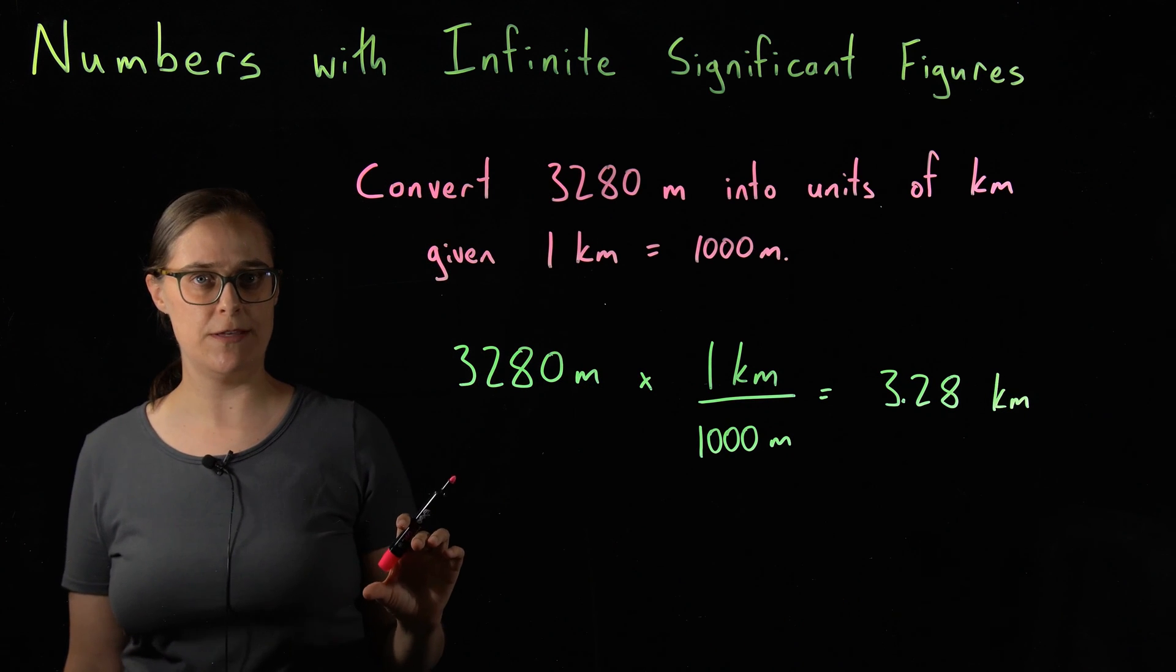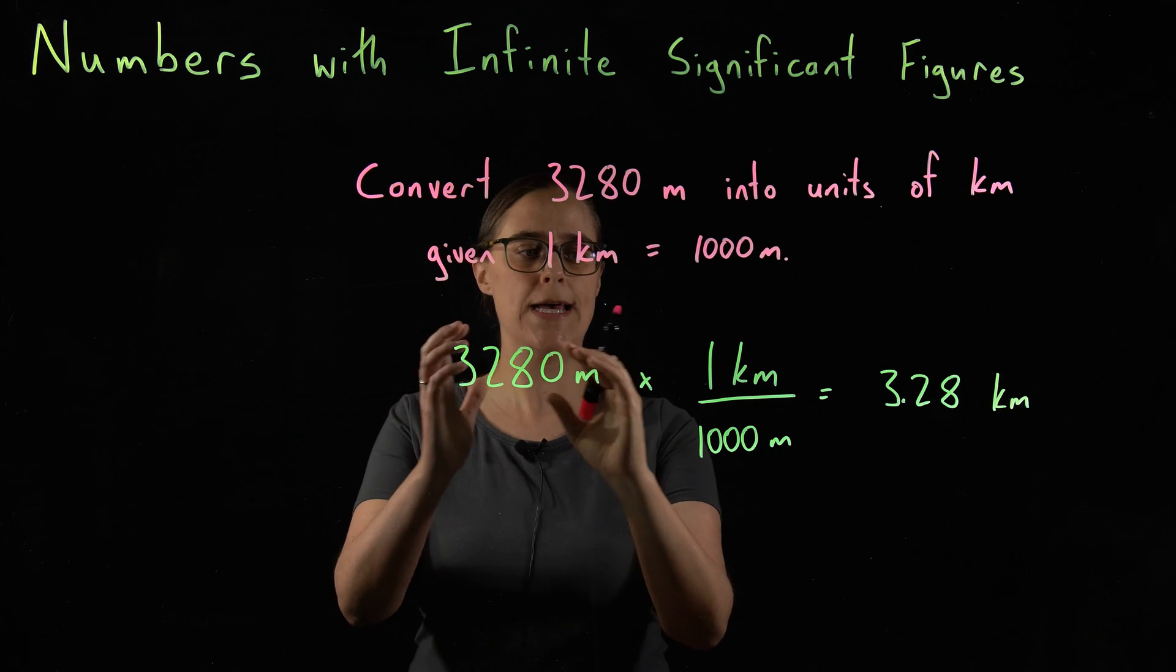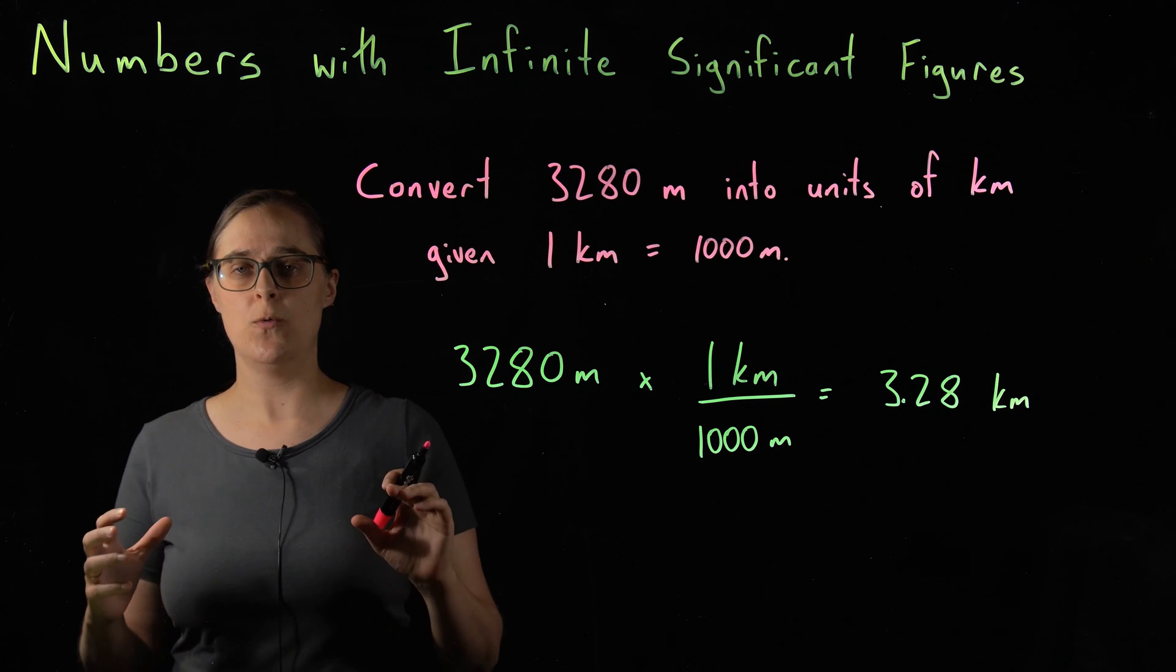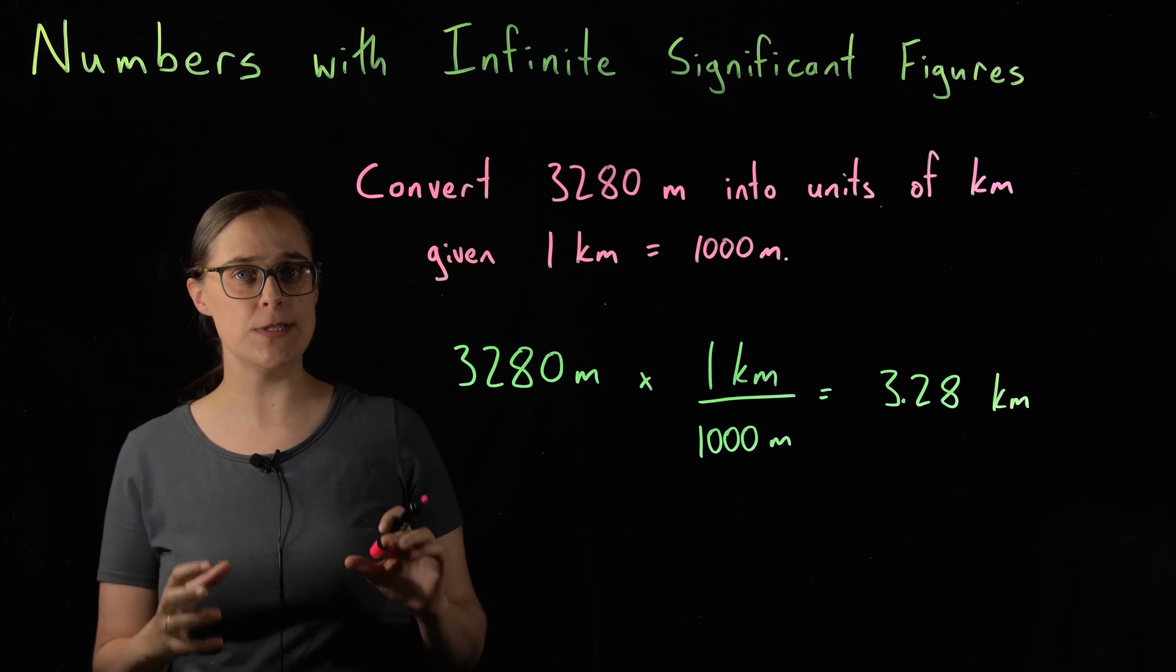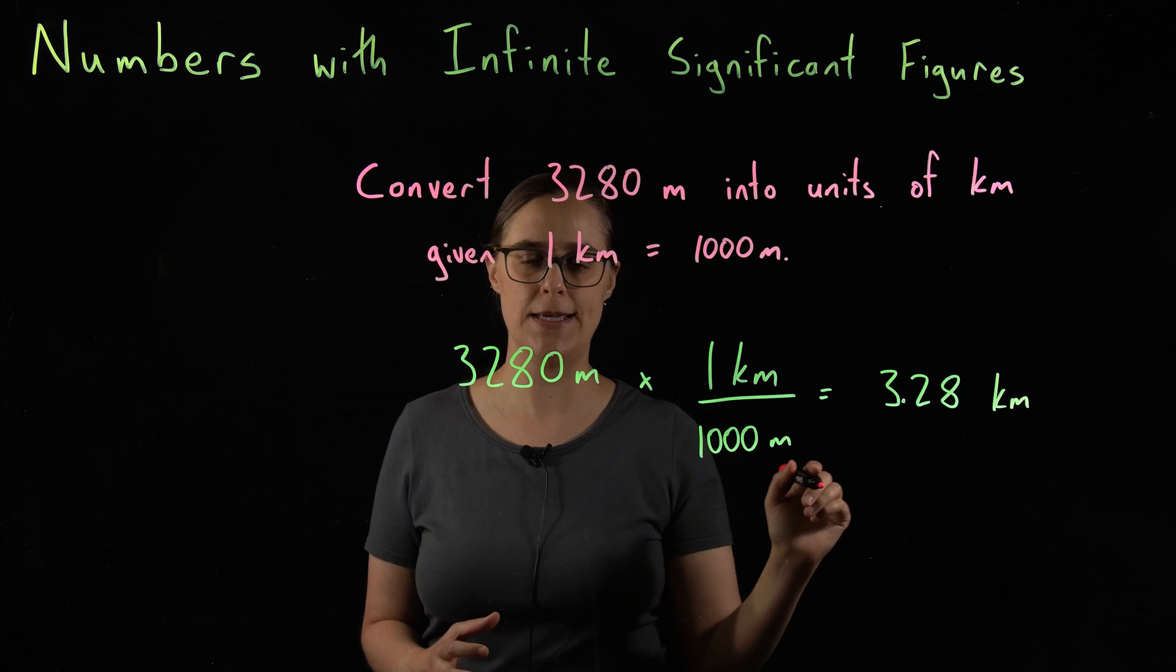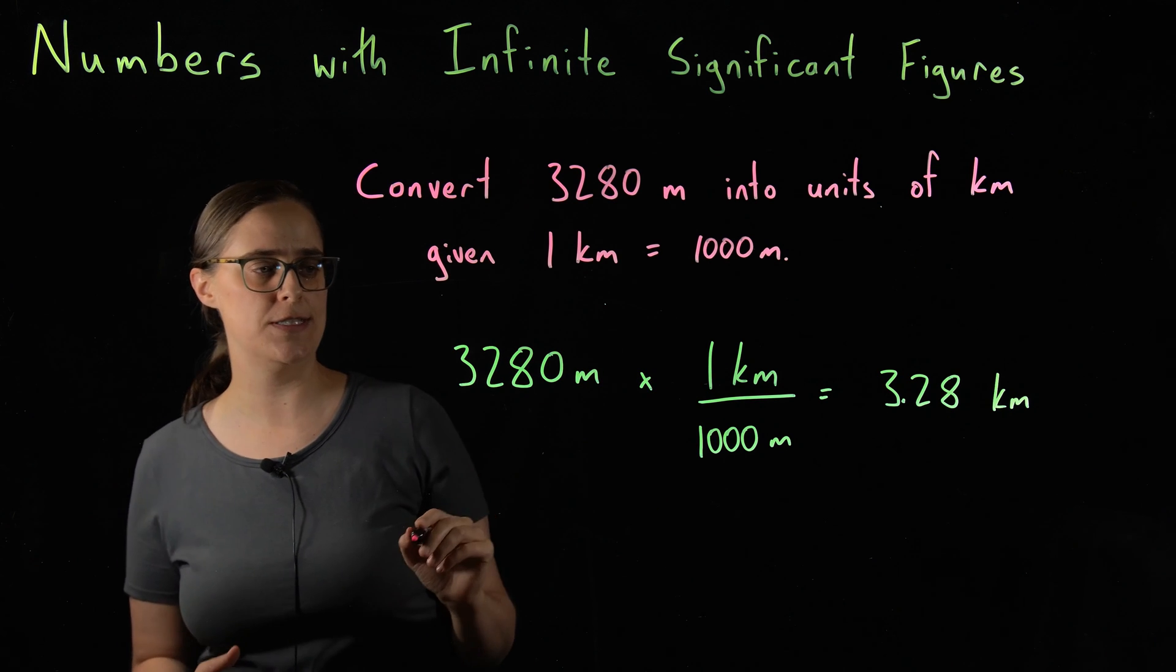3280 meters times 1 kilometer divided by 1,000 meters equals 3.28 kilometers. So the rules for significant figures in multiplication and division is that we need to figure out how many significant figures are in all of the starting numbers. We take whichever one has the fewest number of significant figures. That is how many significant figures should be in the answer.